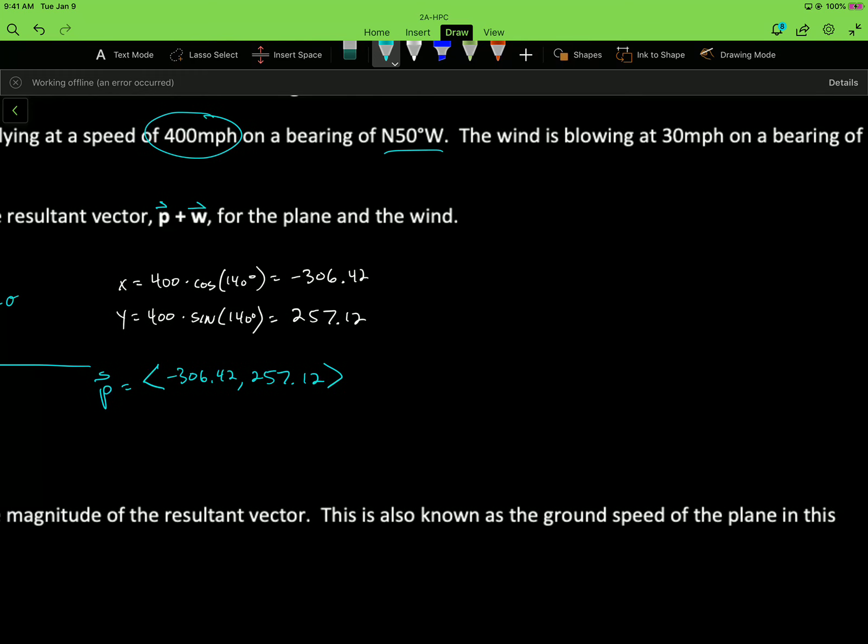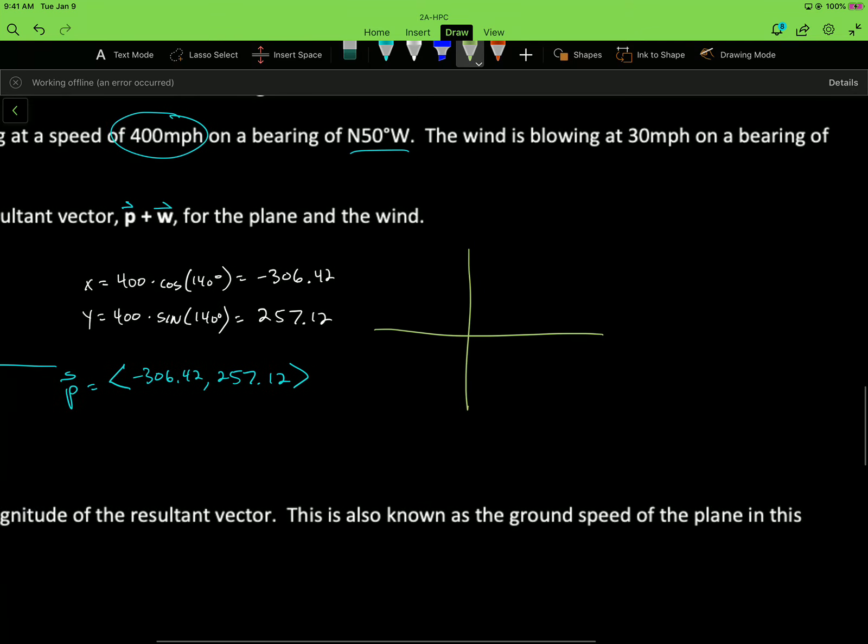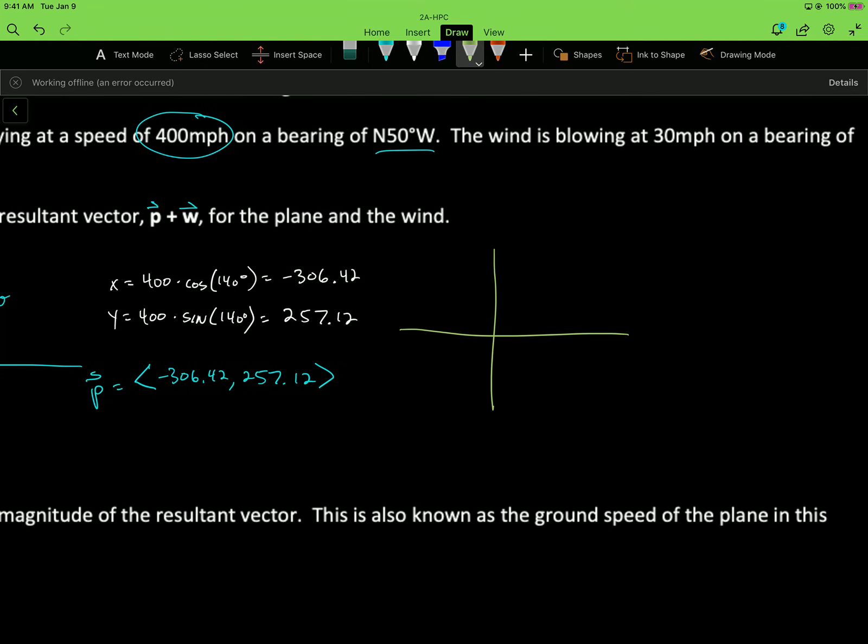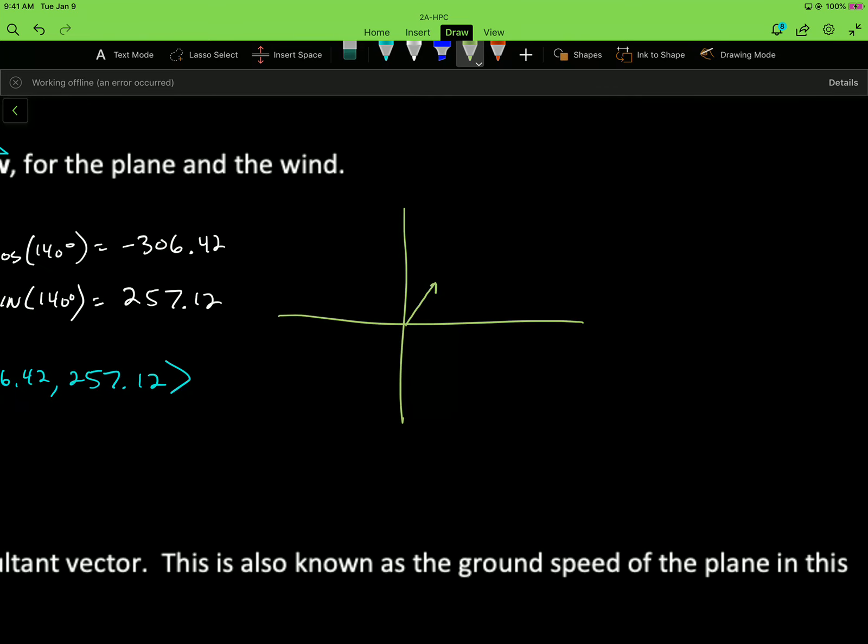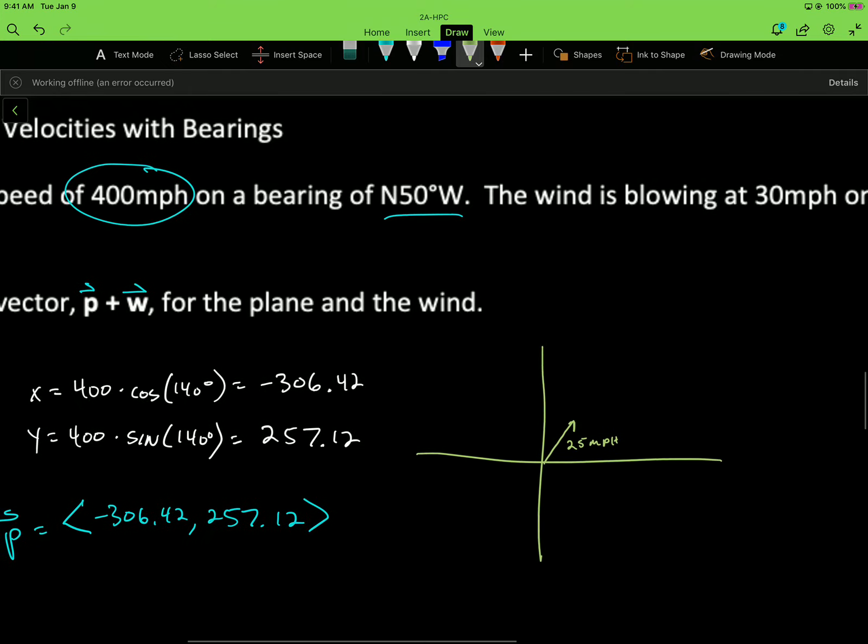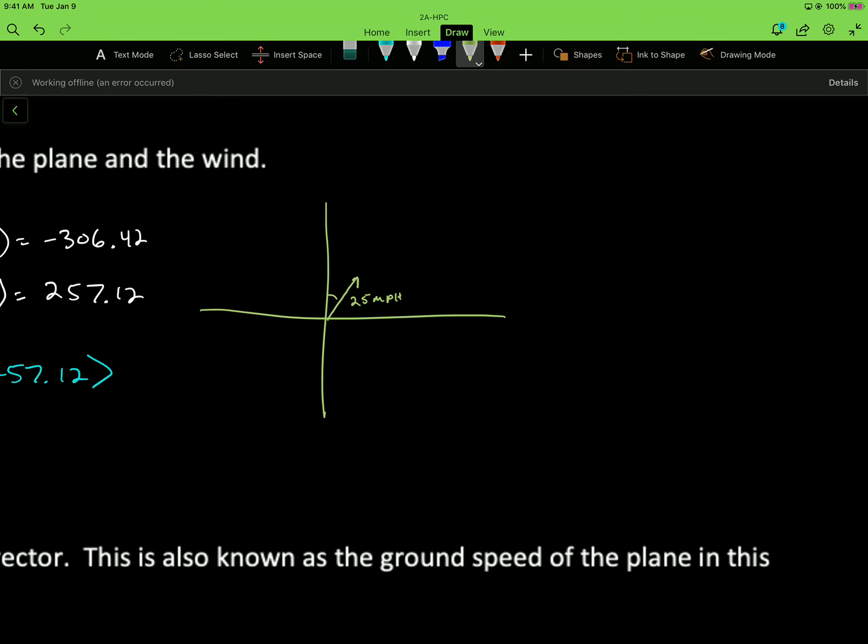Now we're going to do our vector for the wind. The wind is blowing 30 miles per hour on a bearing of 25 east of north, 25 degrees east of north. We've got 25 miles per hour. And then this angle is 25 degrees. So keep in mind that means our theta that we're going to use in our formulas is 90 minus 25. So it's going to be 65 degrees.